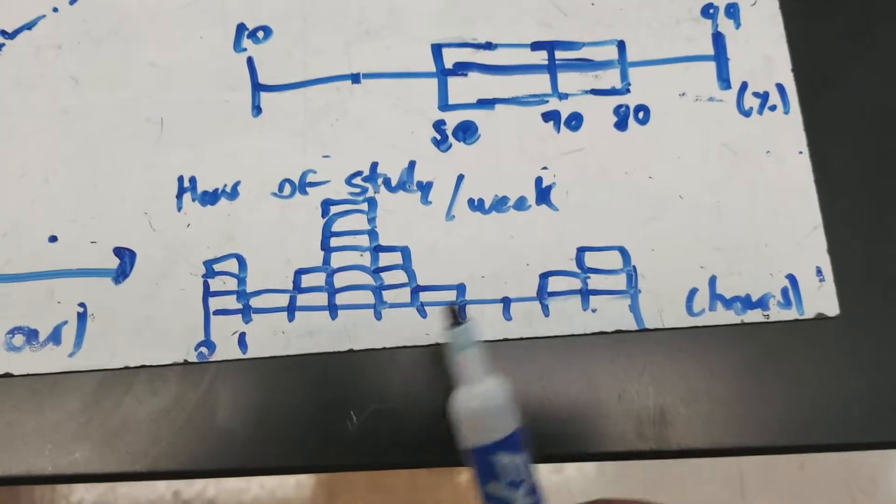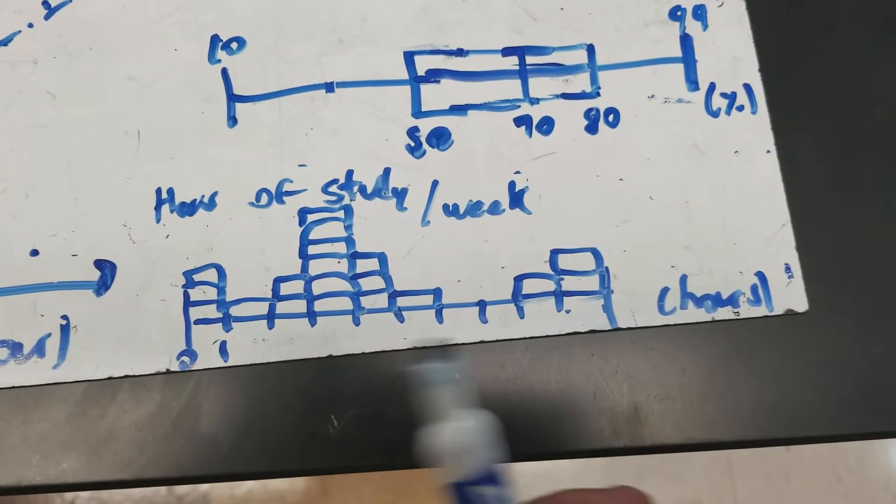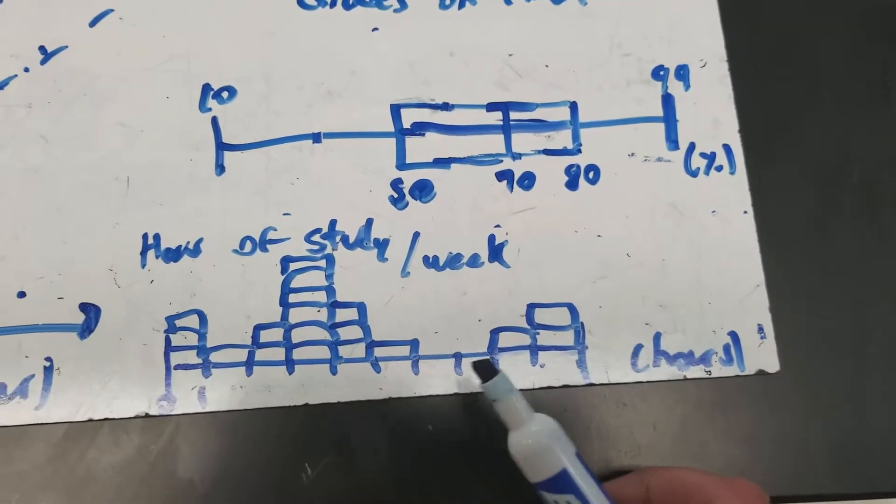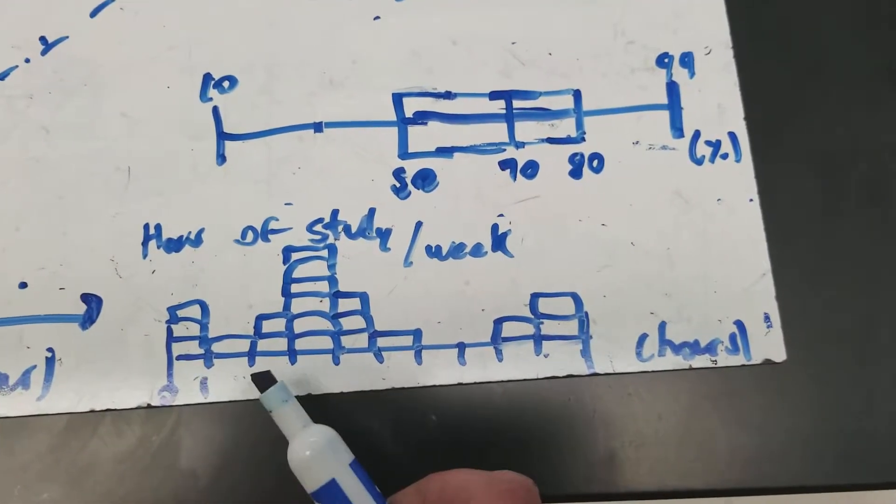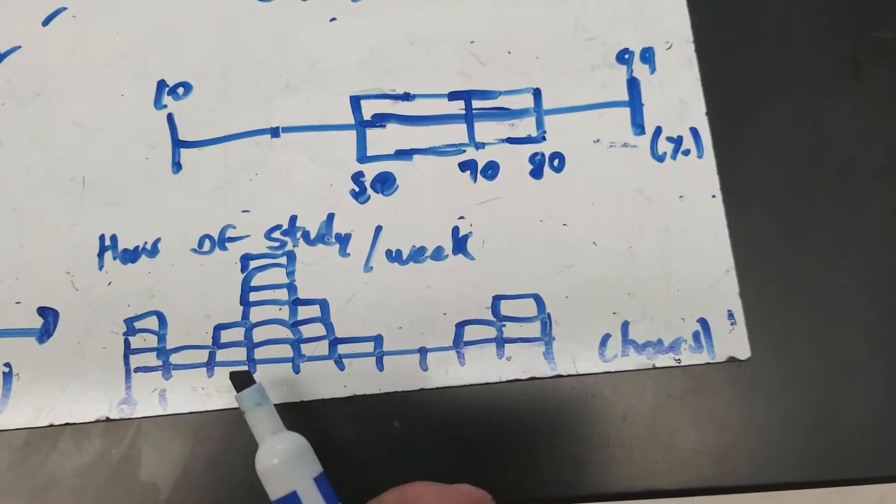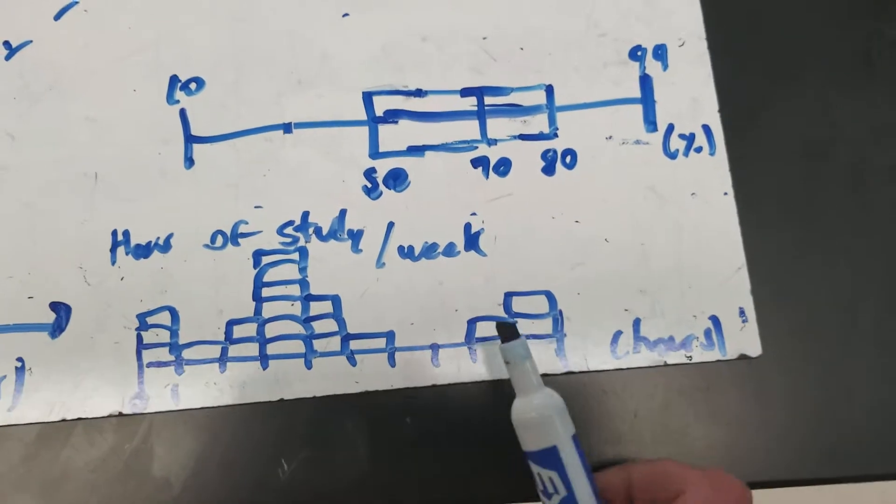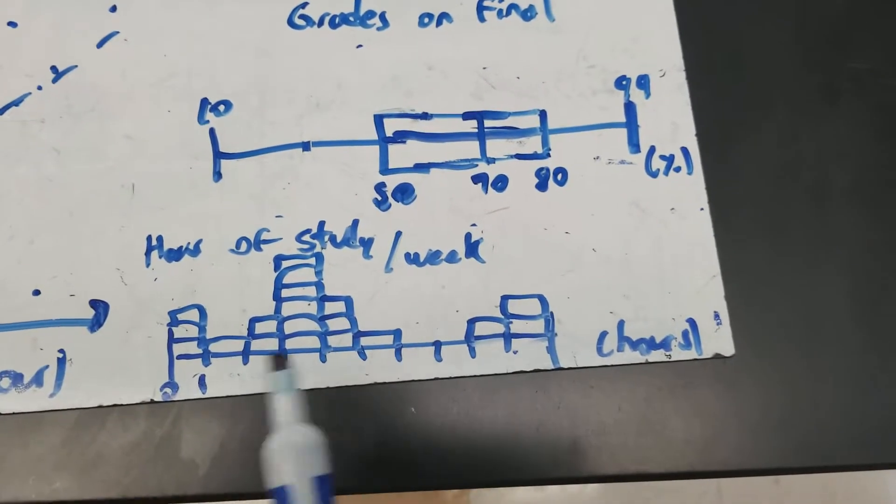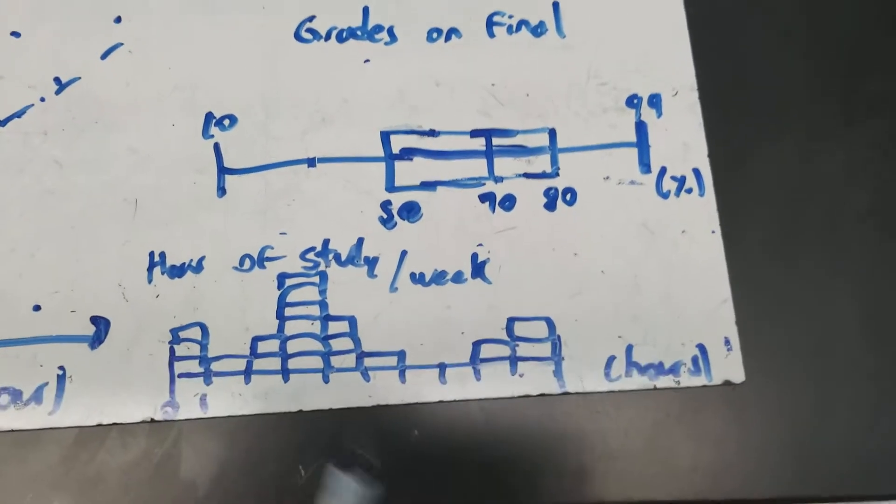Hours of study per week, right? So then you have hours on the axis. And each box represents one person that was in that range. So it looks like most people were studying about four hours a week. Some were at five. Some people did less. And a few people even did a lot more. So that's what I use a histogram for, to show the distribution of data across that.